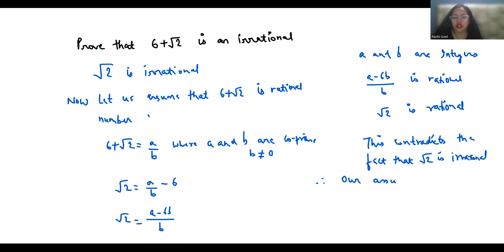The assumption that we made here, that 6 plus root 2 is rational, is wrong.